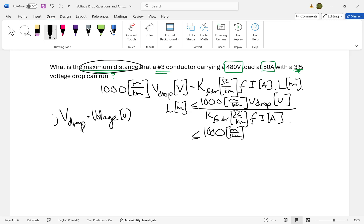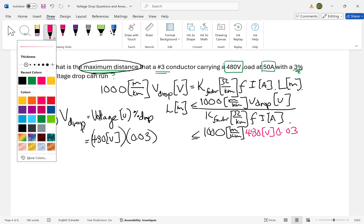That's 480 volts times 0.03 to represent the 3% voltage drop that we will accept. I can put that right in the equation: 480V × 0.03. Let's see what else needs to go in here. I also need to find the K value.